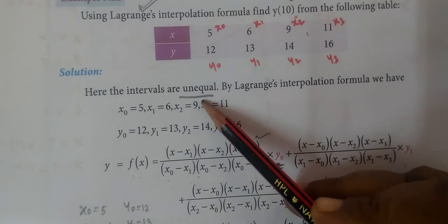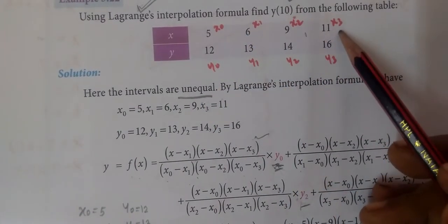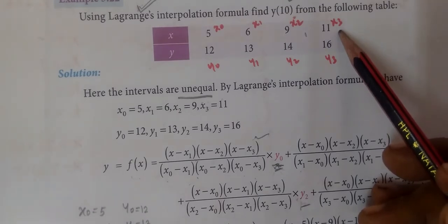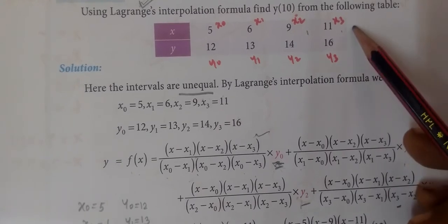Lagrange's - why use this? The intervals are unequal. This interval is 5, 6, 9, 11. If it is equal interval, we use forward and backward interpolation formulas.